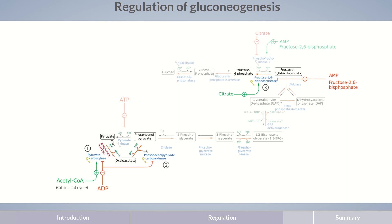Physiologically, AMP, like ADP, indicates lack of energy in the cell. Fructose 2,6-bisphosphate, however, is mainly used for tissue-specific adaptation of metabolism by the signaling molecule cAMP. More information on tissue-specific adaptation can be found in the corresponding AMBOSS article. Finally, citrate signals a sufficient cellular energy supply and therefore has the opposite effect of AMP.